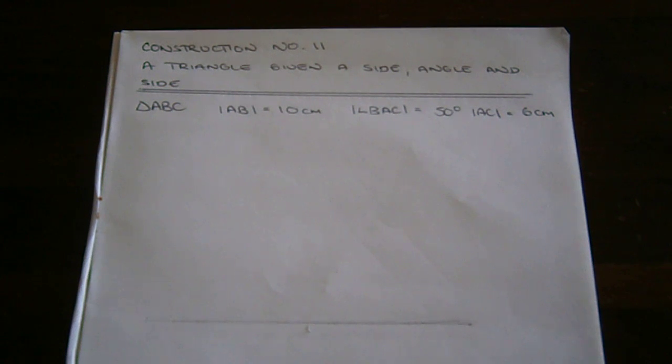Construction number 11: to construct a triangle given a side, an angle, and a side. We'll construct triangle ABC where the length from A to B is 10 centimeters, angle BAC is 50 degrees, and the length from A to C is 6 centimeters.